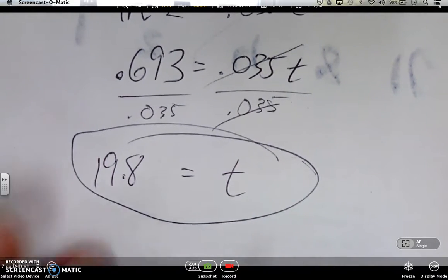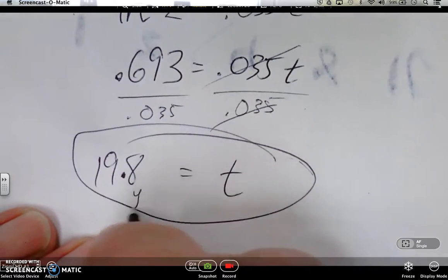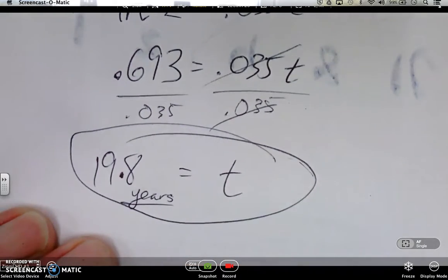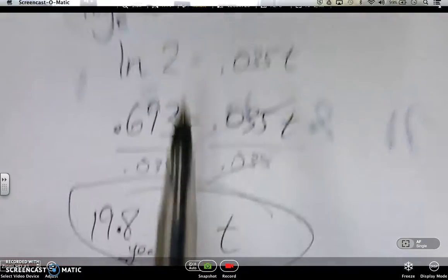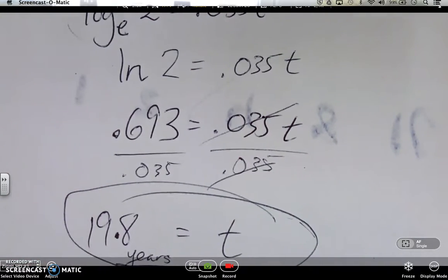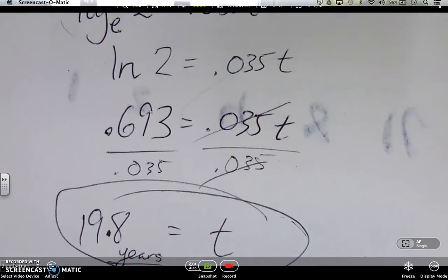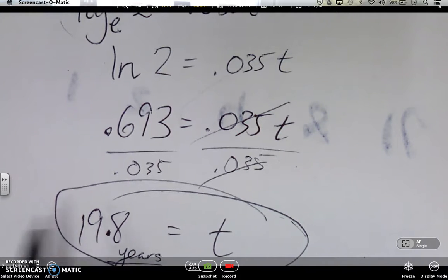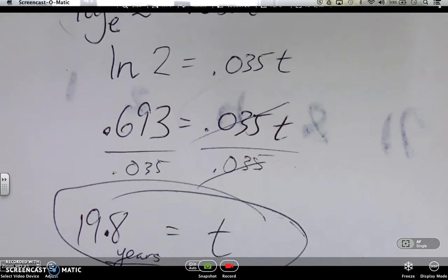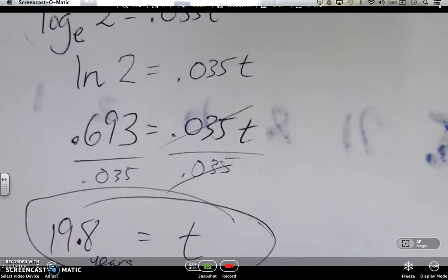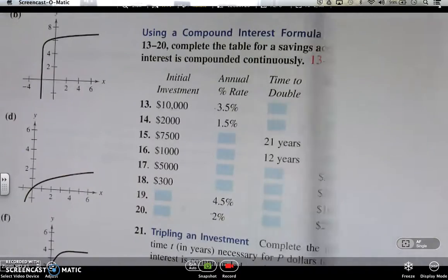Now, does that make any sense in terms of an answer? Well, again, we're talking about time. We're talking about years. And what you'll find when we do talk about money, 20 years is about fair for doubling time if you're at about 3.5%. So this does make sense. What wouldn't make sense is if you got a negative. You can't have negative time. That wouldn't really make sense in terms of most problems. So that's what I mean in terms of does it make sense? Does it not make sense? Does it work? Does it not work? So that is number 13.